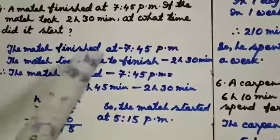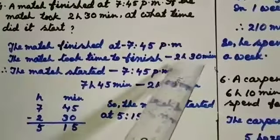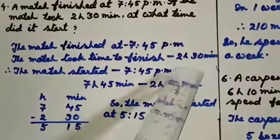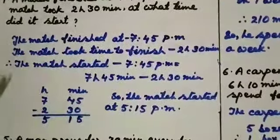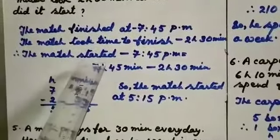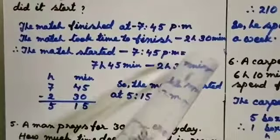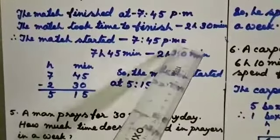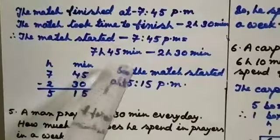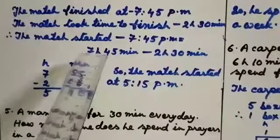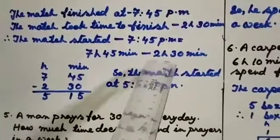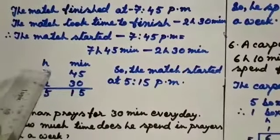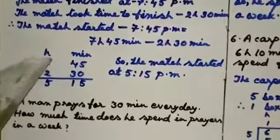You will write: the match finished at 7:45 pm. The match took time to finish 2 hours 30 minutes. Therefore the match started 2 hours 30 minutes before this 7:45 pm. So 7:45 pm means 7 hours 45 minutes, and from that time you will subtract 2 hours 30 minutes. So see here the subtraction. You will write the numbers accordingly.